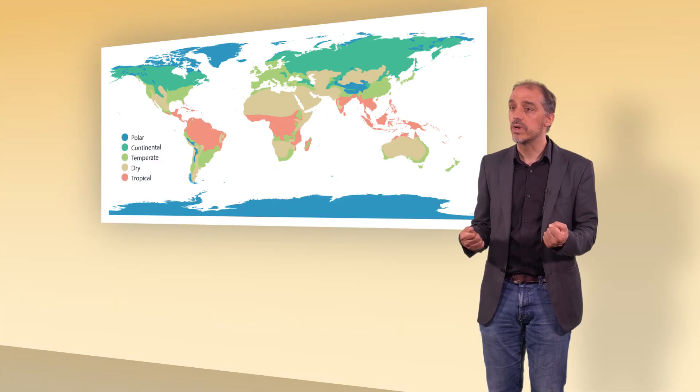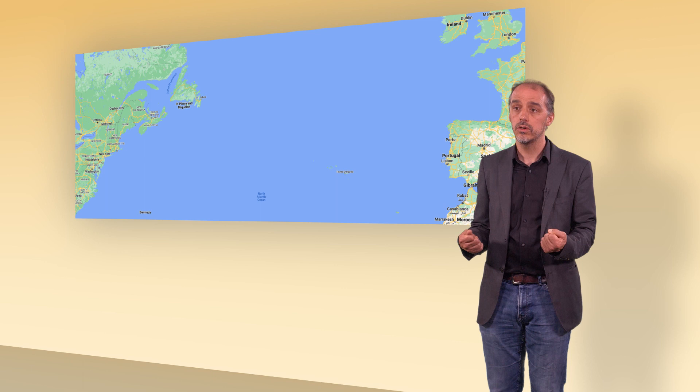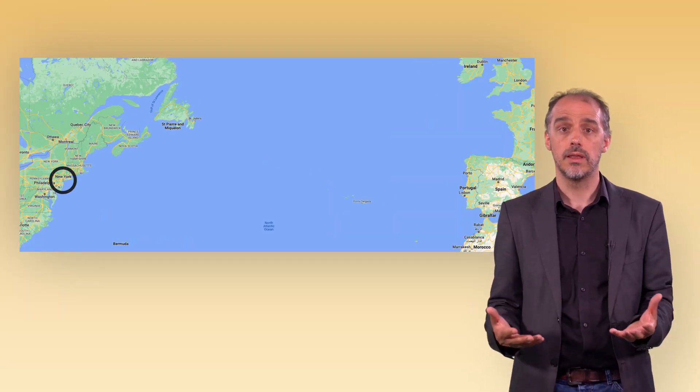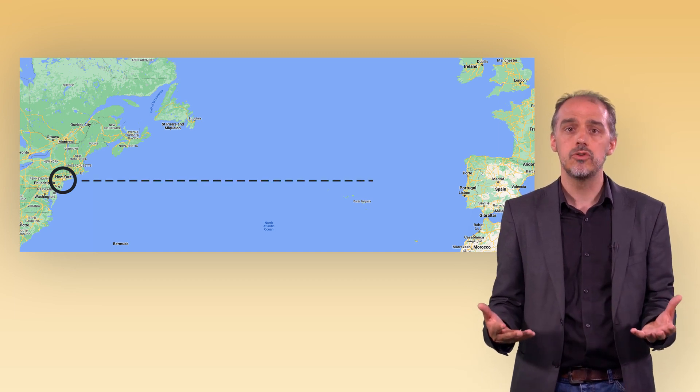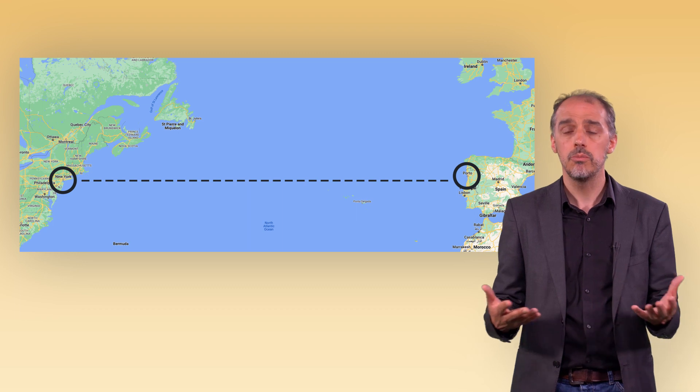It is tempting to explain the continental climate of New York, with strong cold winters and warm summers, by its location and the energy it receives from the sun. But it is at the same latitude as Porto, which has a temperate climate.